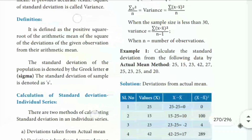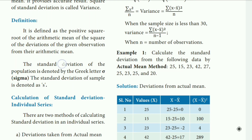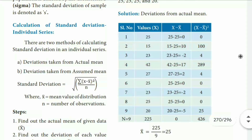Example 1: calculate the standard deviation from the following data by the actual mean method. The data is: 25, 15, 23, 42, 27, 25, 23, 25, and 20. The solution uses deviation from the actual mean. We set up columns for x and x minus x-bar.